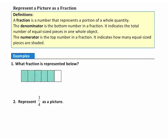Now let's look at some examples relating a picture and a fraction. Example 1: What fraction is represented below? I'll start by drawing a fraction bar. The denominator is the number of equal-sized pieces the picture is split into — there are six pieces, so the denominator is six. The numerator is the number of shaded pieces, which is five. So this picture represents the fraction five-sixths.